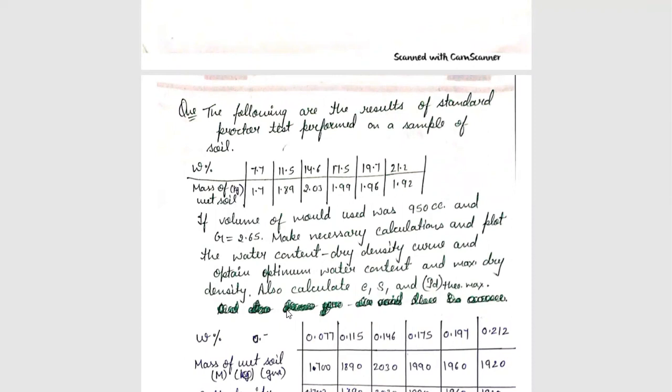About standard proctor test observation, this is the formula. This is the question based on the standard proctor test observation. The following are the results of standard proctor test performed. If the volume of mold used was 950 cc and G is equal to 2.65, make necessary calculation and plot the water content dry density curve and obtain optimum water content and maximum dry density and also calculate E, S and rho d theoretical maximum.